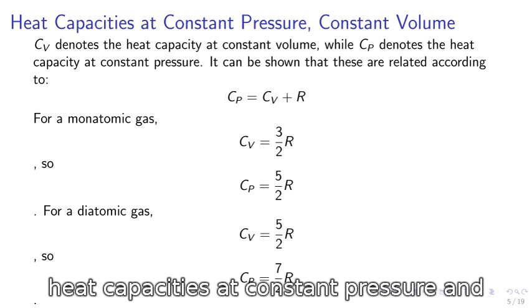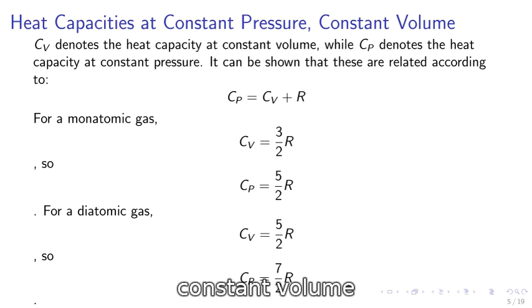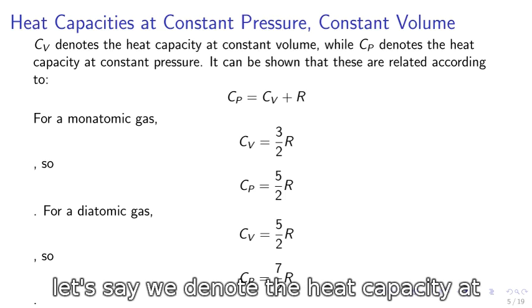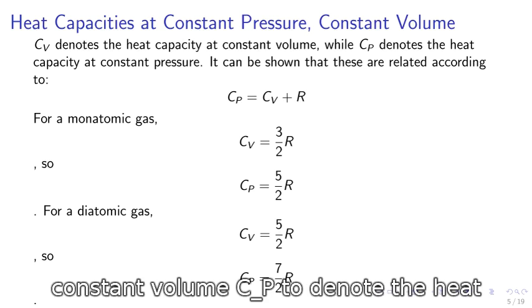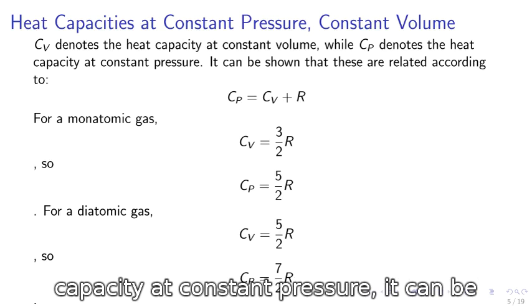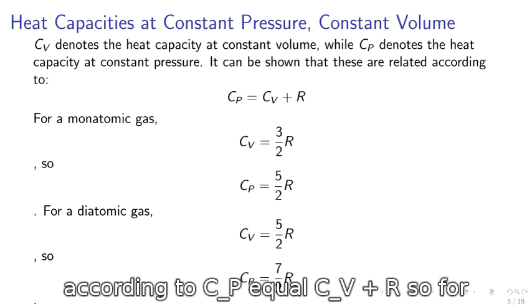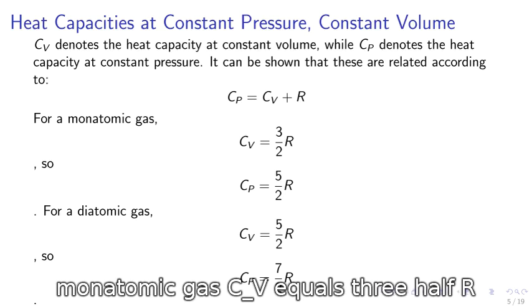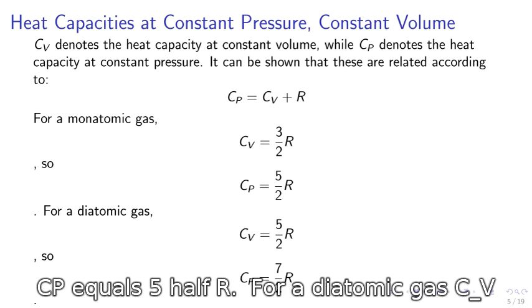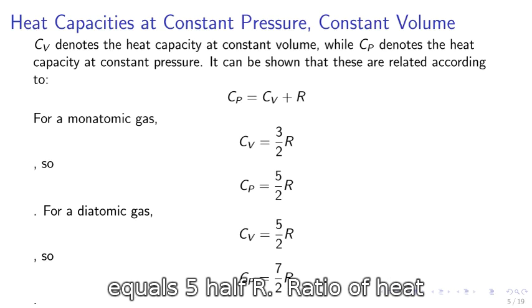Heat capacities at constant pressure and constant volume. CV denotes the heat capacity at constant volume while CP denotes the heat capacity at constant pressure. It can be shown that these are related according to CP equals CV plus R. For a monatomic gas, CV equals 3/2 R and CP equals 5/2 R. For a diatomic gas, CV equals 5/2 R.